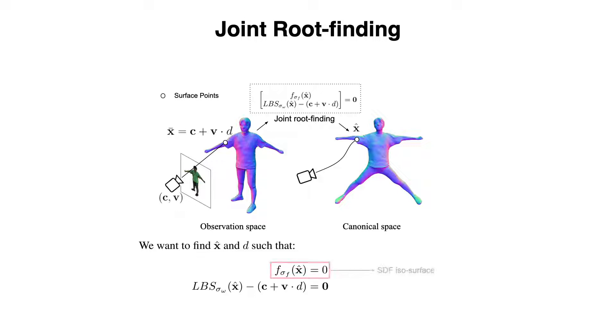The SDF isosurface condition states that the canonical point should be on the isosurface, while the LBS condition states that after applying forward LBS to the canonical point, the transformed point should lie on the specified camera ray.